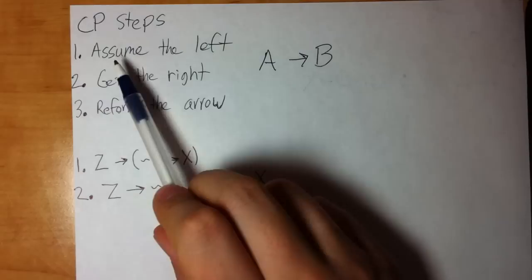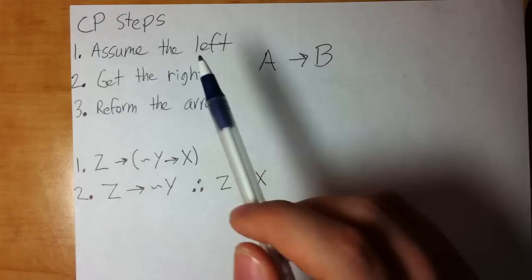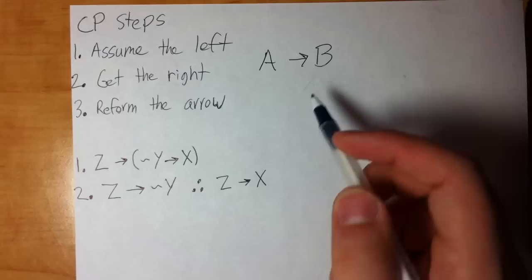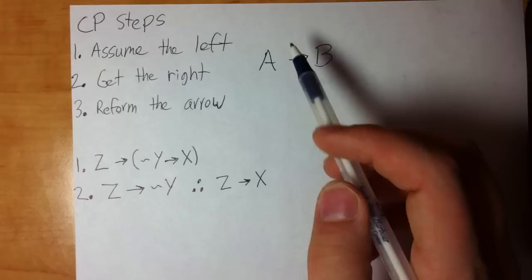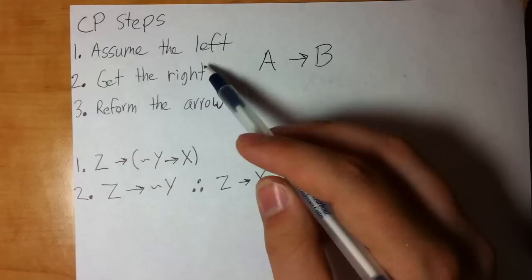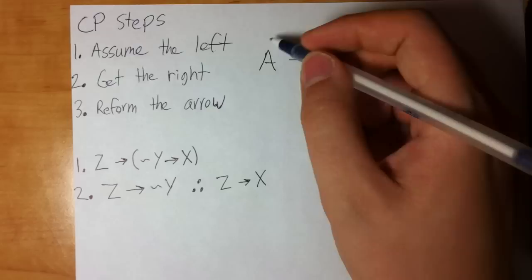Step one for CP: assume the left — that's an abbreviation for 'assume the left side of the conditional that you're trying to form.' The great thing about CP is that it lets you form arrow statements, conditional statements. So if I want to form a conditional statement, it could be my conclusion or just any arrow I'm trying to form. I assume the left side of that arrow.